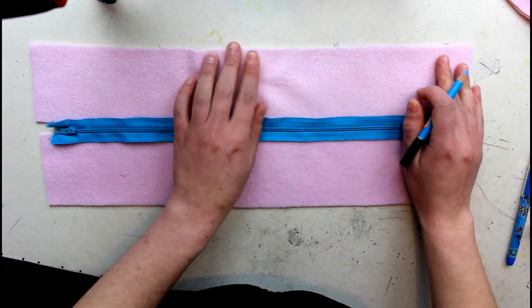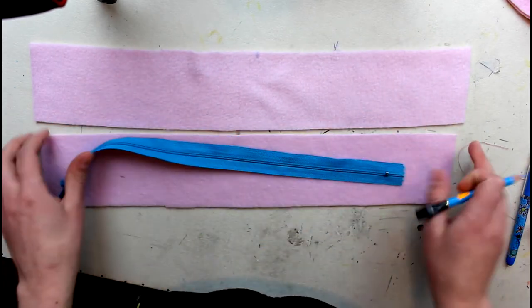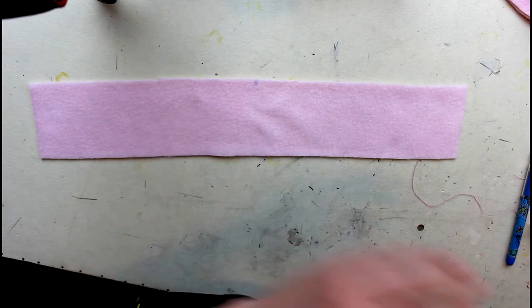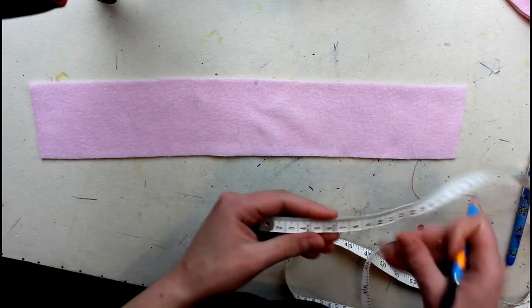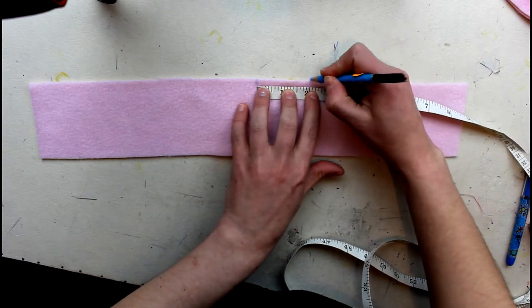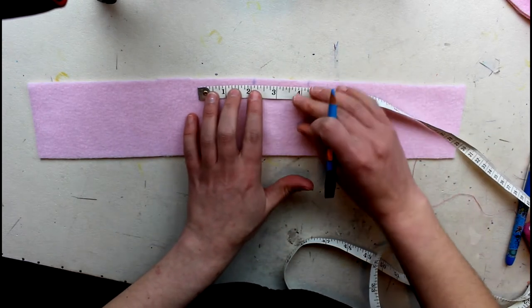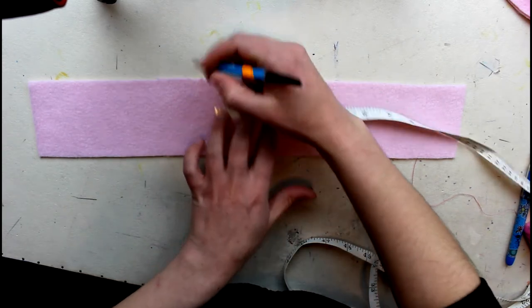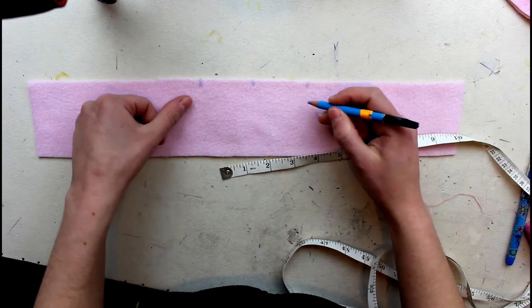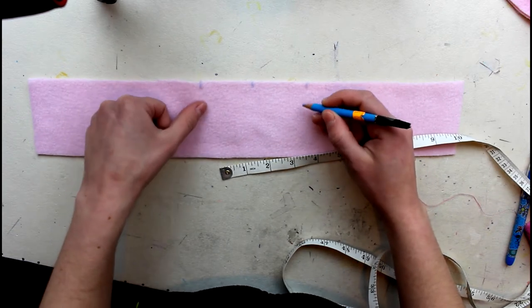On one of the sides on each tab you're going to have two notches. That's to tell you where the zipper's going to go. On one of the tabs on the side that has no notches, mark the midpoint, and then on either side of this midpoint do a marking at the two inch point. That's going to mark our ear placement.